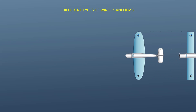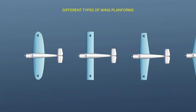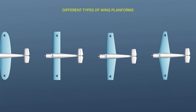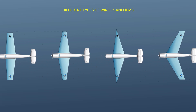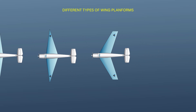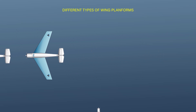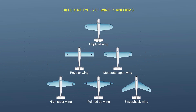Airfoil section properties differ from those properties of the wing or aircraft as a whole because of the effect of the wing planform. A wing may have various airfoil sections from root to tip, with taper, twist, and sweepback. The resulting aerodynamic properties of the wing are determined by the action of each section along the span.